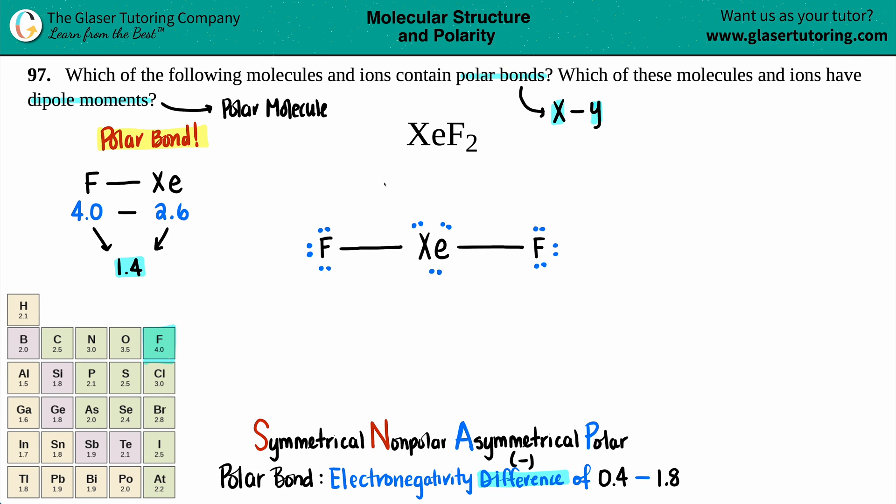So we're looking past the bonds and we're going to see if we have symmetry or asymmetry with the whole entire molecule. And this is where SNAP comes in. S-N-A-P. Symmetrical are Nonpolar molecules and Asymmetrical are the Polar molecules. And that's what has the dipole moment. Only polar molecules have dipole moments.